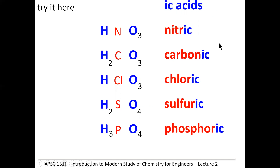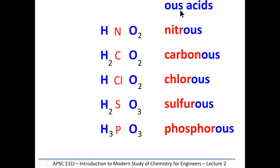Now I'll show you another group of five acids. All I've done is taken a single oxygen off the 'ic' acids to get the 'ous' acids, keeping the first part of the name the same. Nitric acid HNO₃ becomes nitrous acid HNO₂. Carbonic acid H₂CO₃ becomes H₂CO₂. Notice the number of hydrogens hasn't changed — that's the relationship between the 'ic' acids and the 'ous' acids: remove one oxygen.